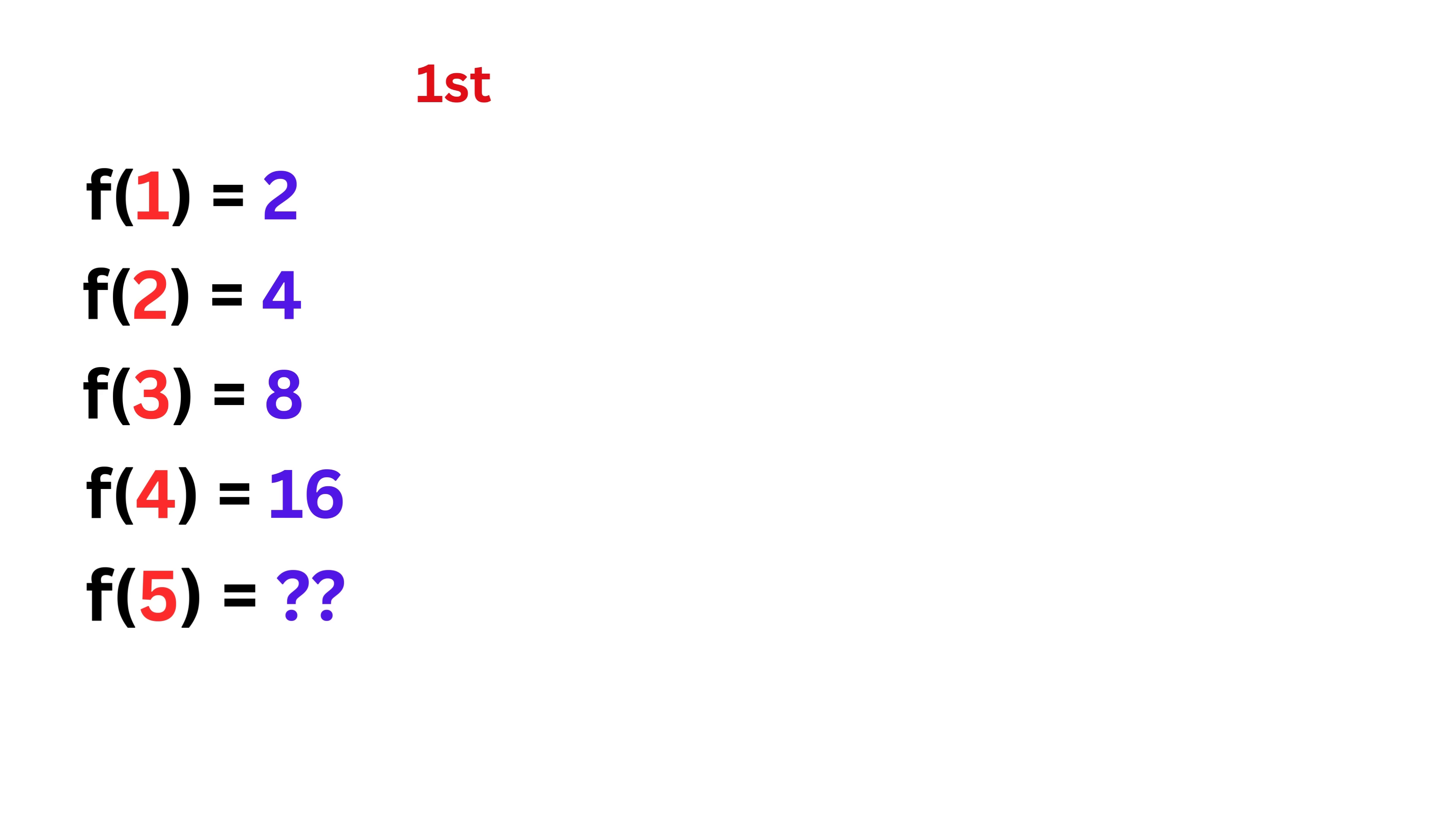Take the first difference of these values. We get 2, 4, and 8. These differences must be quadratic in nature. Now let us take the second differences of these values, and we get 2 and 4. These differences must be linear in nature. Finally, take the third difference of these values, and we get 2, which must be a constant.